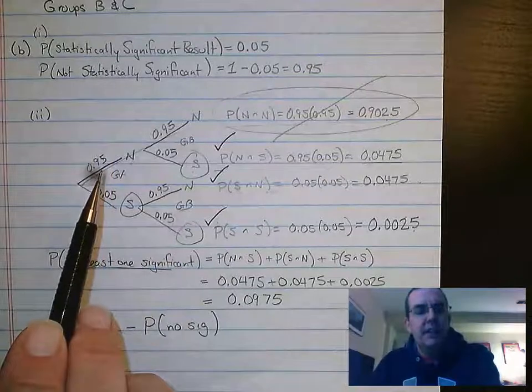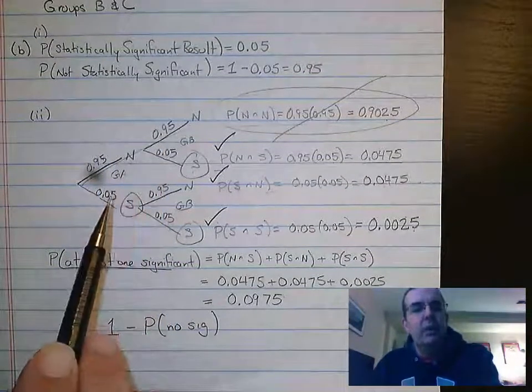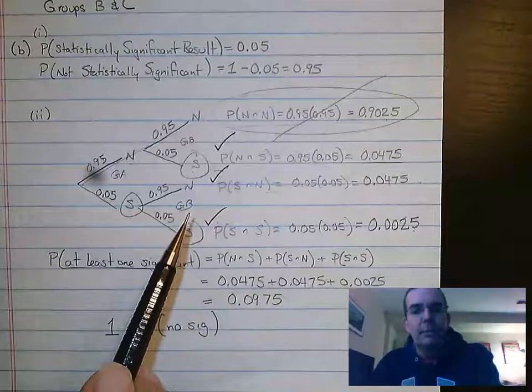So we label these things 0.95 is not significant, 0.95 is not significant, 0.05 is significant, 0.05 is significant, significant. This is what our tree diagram looks like.